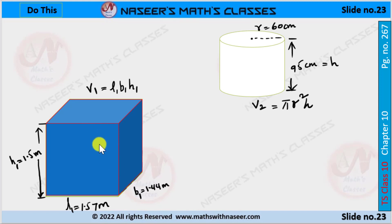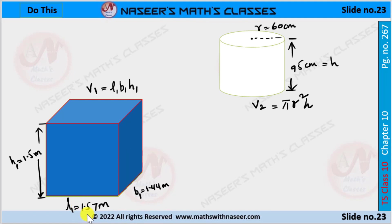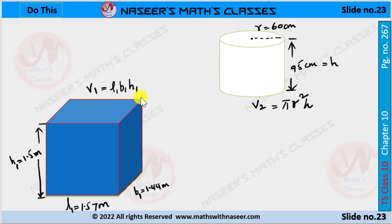From the given data we can draw the figure. Here this is the sump which is in the form of a cuboid. Length L1 is 1.57 meters, breadth B1 is 1.44 meters, and height H1 is 1.5 meters. Volume V1 is equal to L1 × B1 × H1.